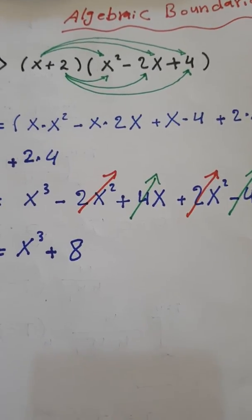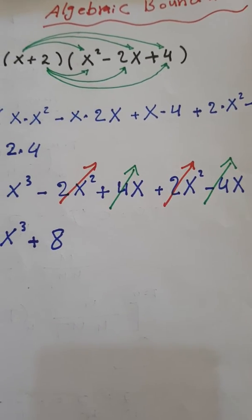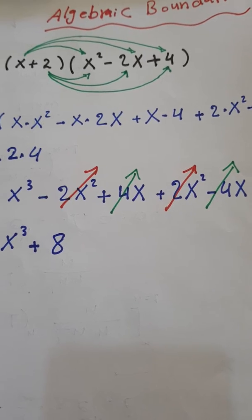two parts, x plus 2, first part, and go to the second part, x squared minus 2x plus 4.